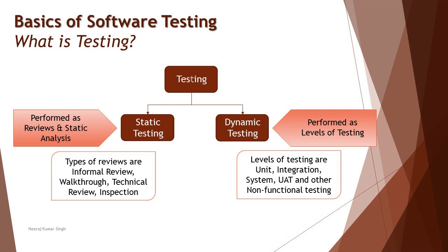The second type of testing is dynamic testing. The major difference is that static is non-executable and dynamic is executable. Here we have a code and a product which we run, interact with, and test — we validate functionalities by passing values, running the application, and executing the code. Dynamic testing takes place after static testing, and it is performed as levels of testing: unit, integration, system, acceptance, and non-functional levels like performance, security, and usability.